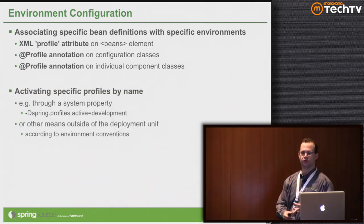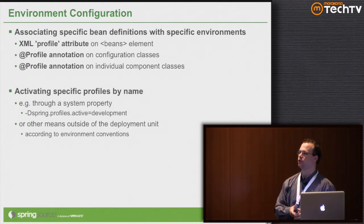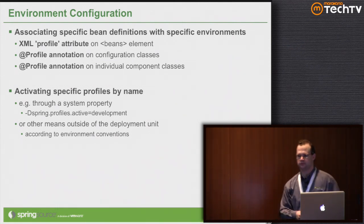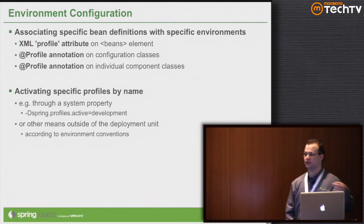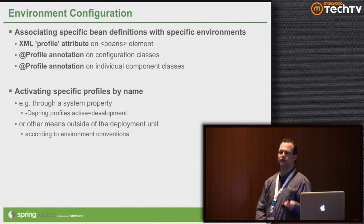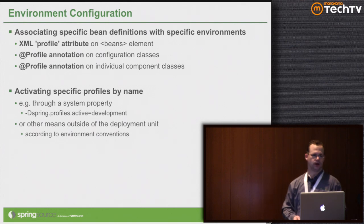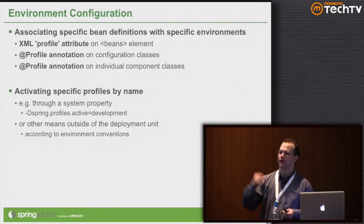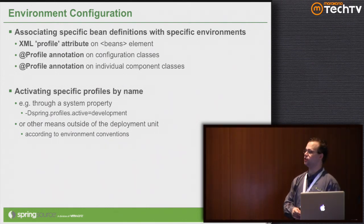There are a couple of supported out-of-the-box idioms for activating profiles. Generically, you can set a system property: -Dspring.profiles.active equals a comma-delimited list of profiles you want to enable. The right way is to get a reference to the application context, then get a reference to the environment, and set the active profile programmatically. In a web environment, Spring boots up as part of the dispatcher servlet initialization — you have a callback class that runs right before the application context comes to life where you can write your programmatic logic for activating profiles.